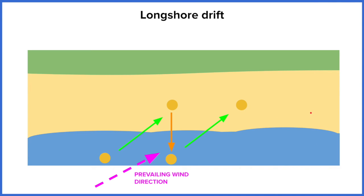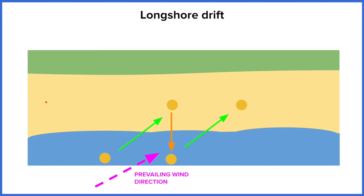Now this causes some problems depending on where you are in the UK, because you might have a lot of material being moved from this area and moved further away or into a different location. So you might actually lose your beach because of longshore drift, and another place might gain it.